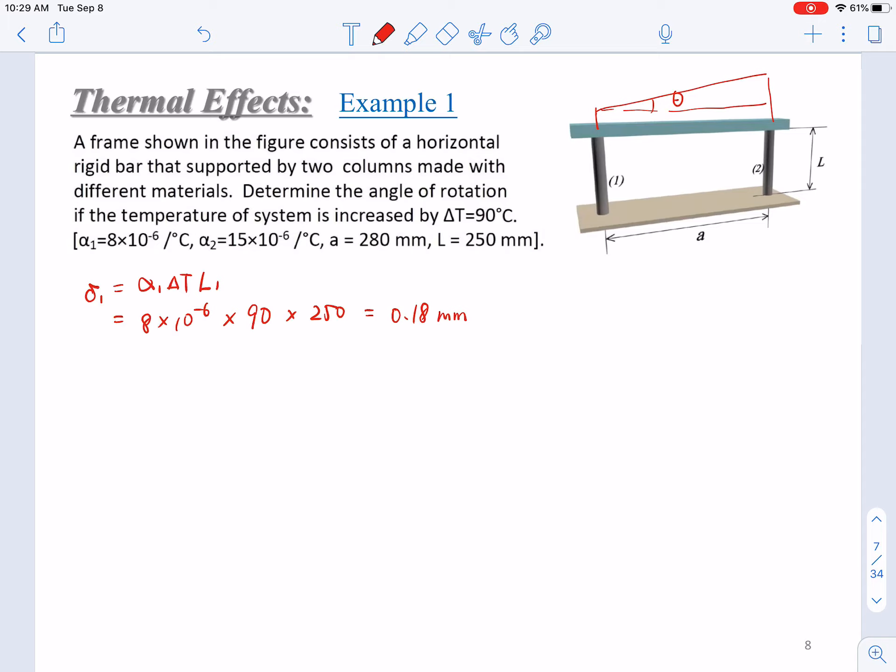In the same way, δ₂ can be calculated from α₂ΔT×L₂. Here we have 15×10⁻⁶ × 90 × 250, giving us δ₂=0.3375 mm.